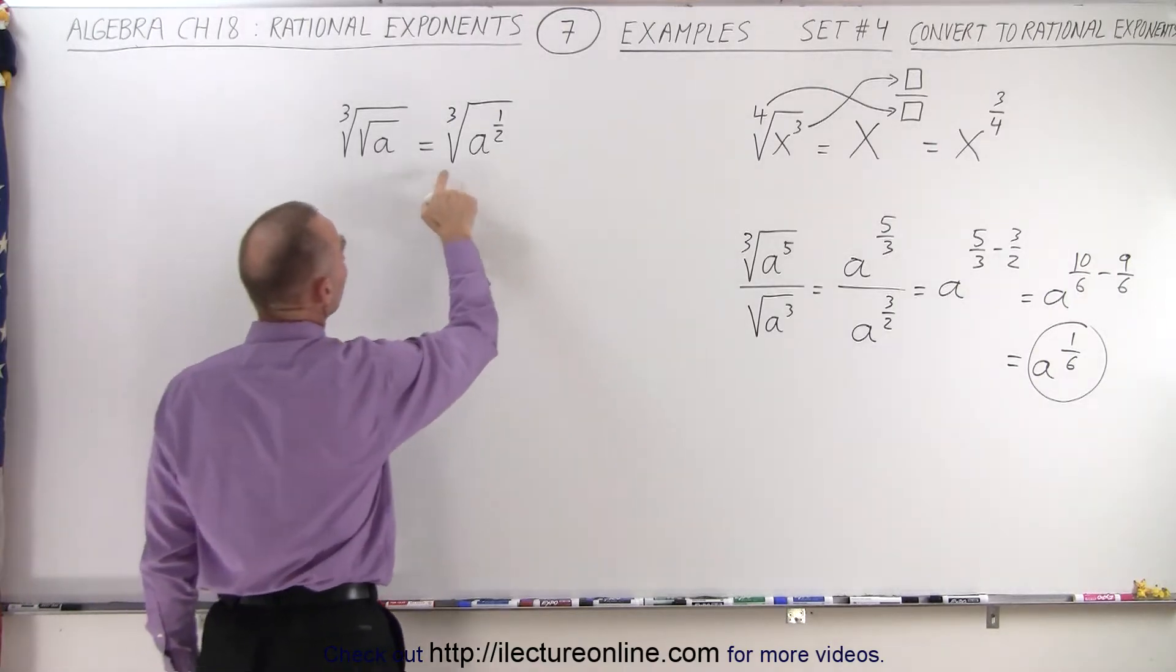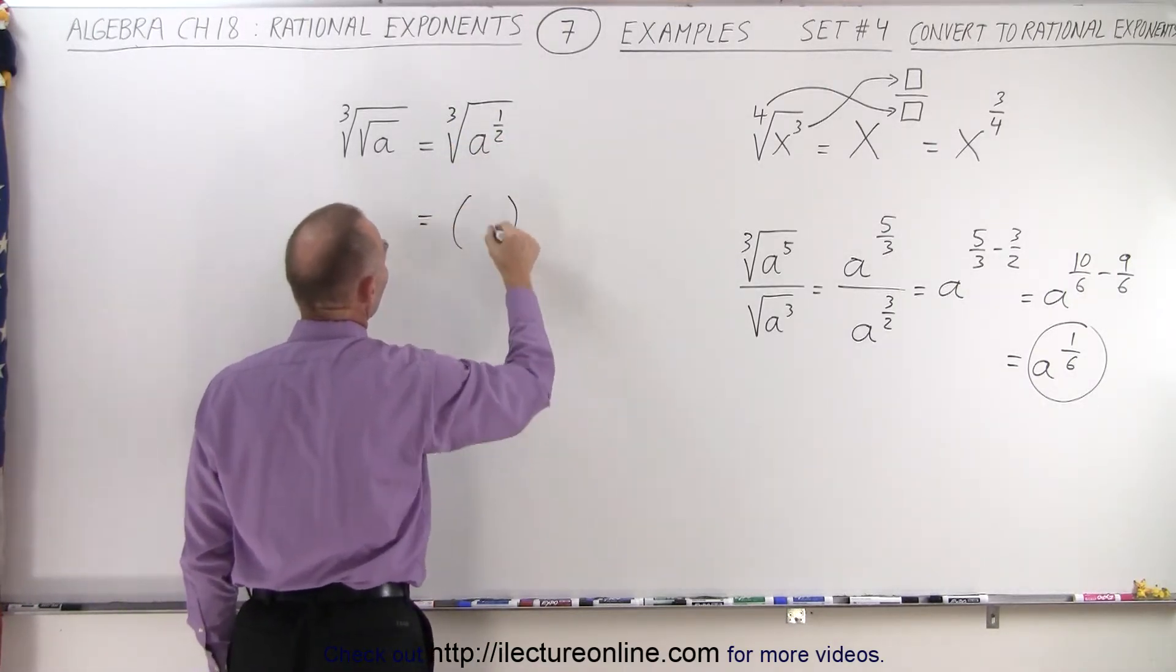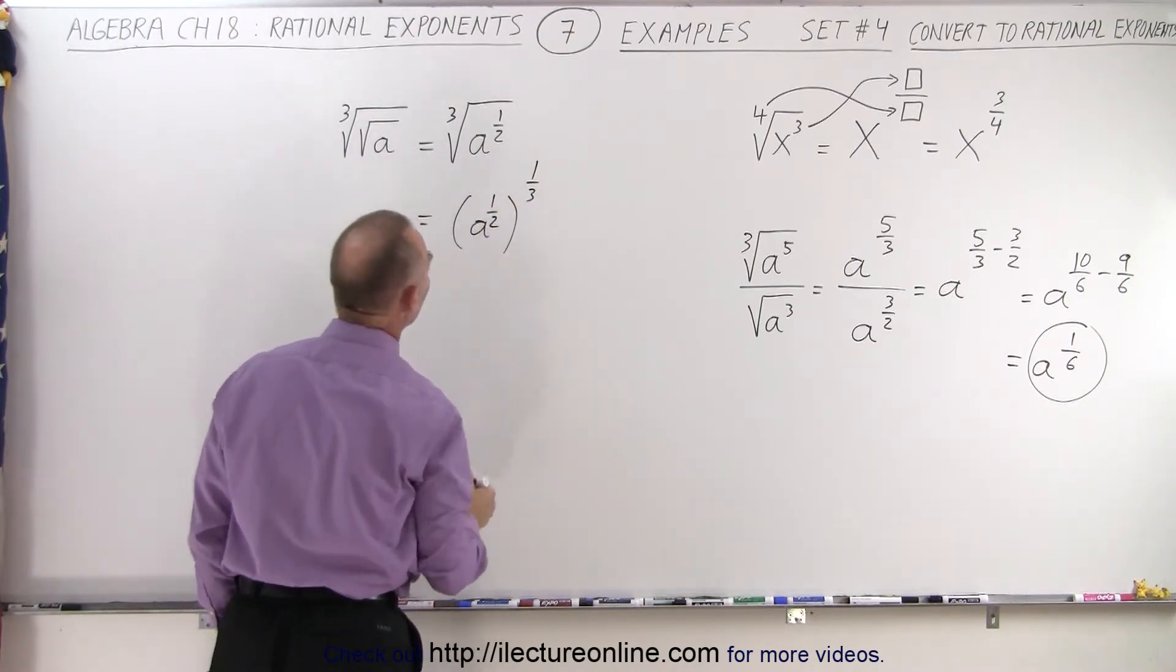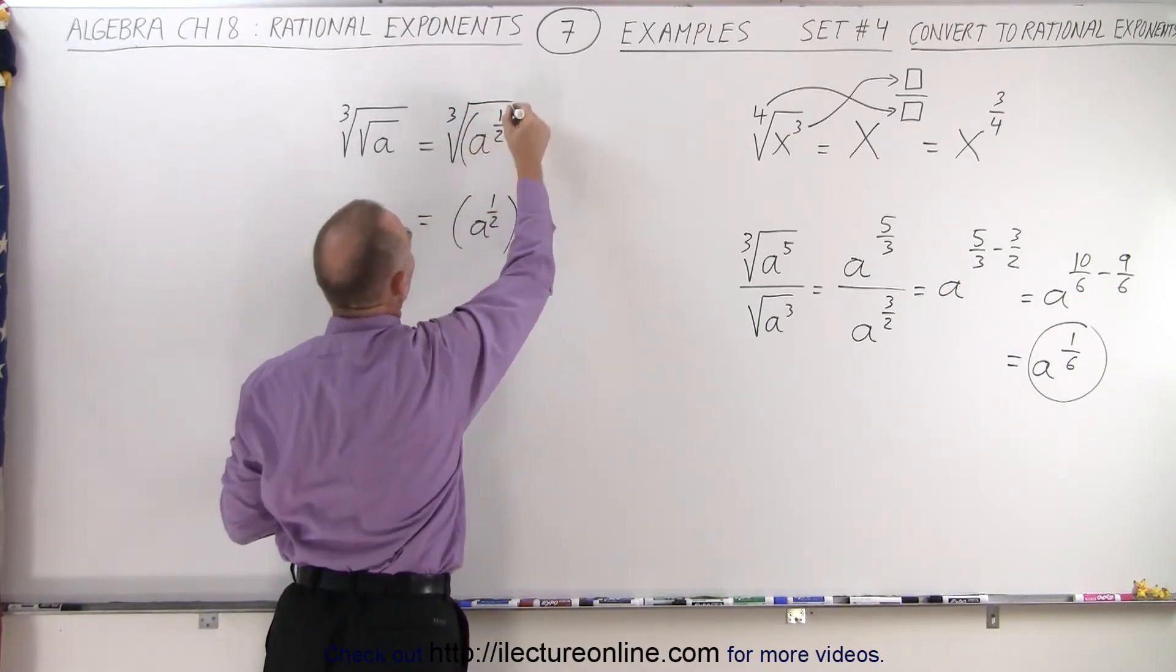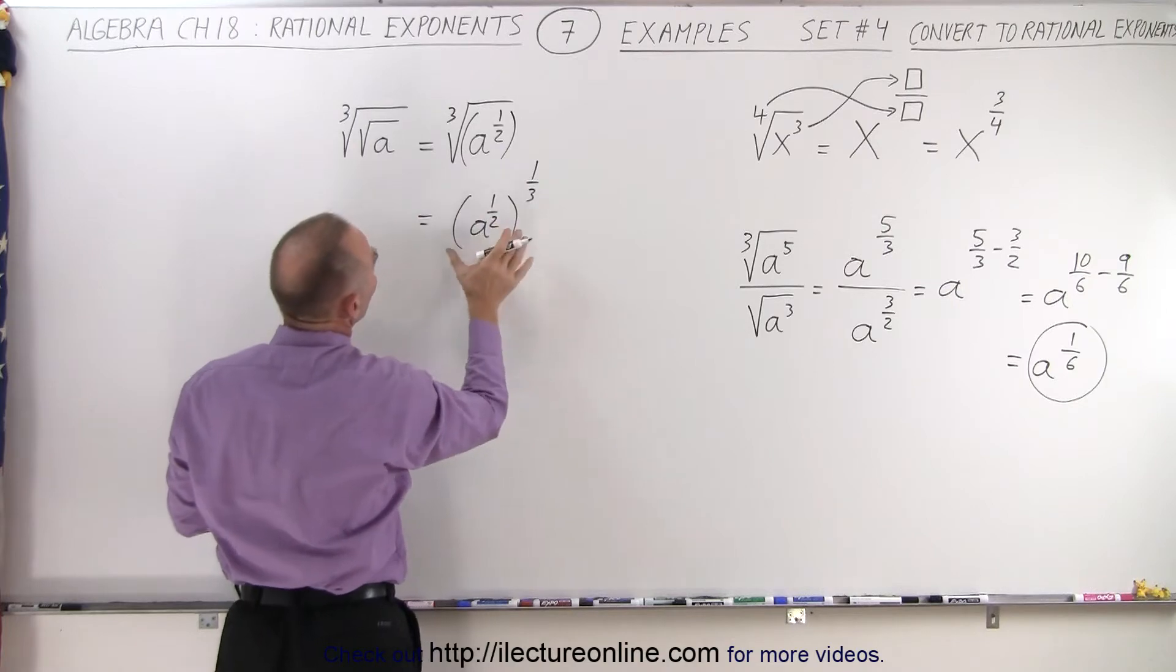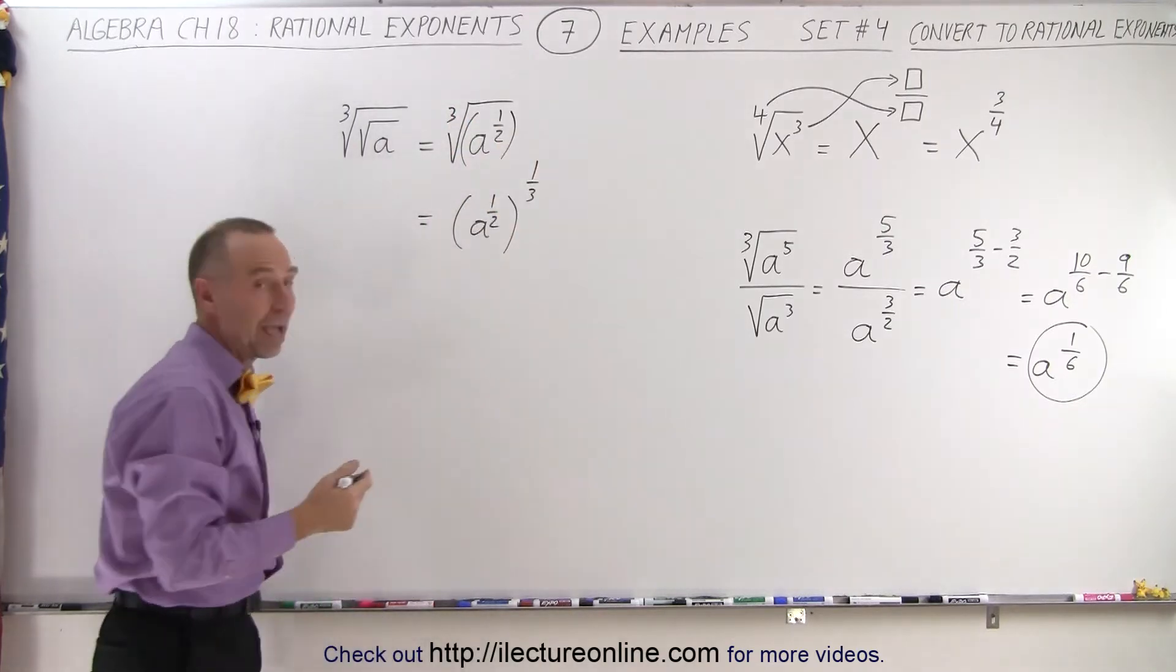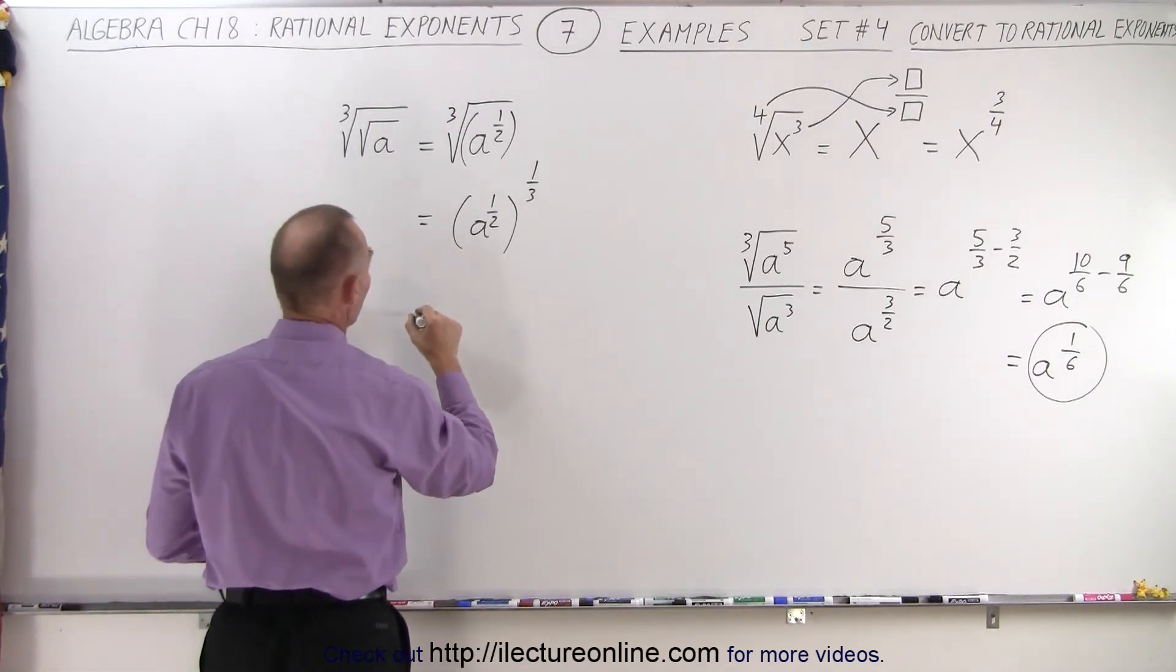Now the cube root of a, and the cube of what's inside can be written as this. It's whatever is inside, which is a to the 1 half power. And that can now be written to the 1 third power, because this is the same as this. Matter of fact, I can put that inside parentheses, so nothing has changed. The only difference is that instead of writing the cube root, we write the 1 third power. And now we have an exponent raised to an exponent. There we simply have to multiply exponents.